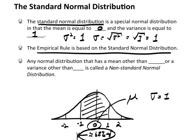Now any normal distribution that has a mean other than 0, or, and this is important, or a variance other than 1, is called a non-standard normal distribution.